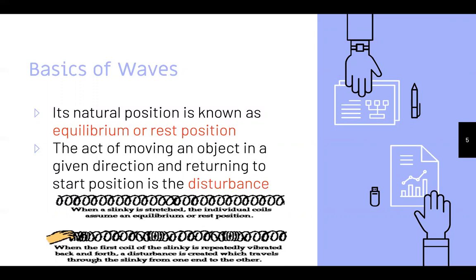When the first coil of the slinky is repeatedly vibrated back and forth, a disturbance is created which travels through the slinky from one end to the other. You could put a massive slinky on a staircase, or just play with one in your hands — move one end and the whole thing will move, just like shaking one end of a rope causes the vibration to travel through the whole rope.